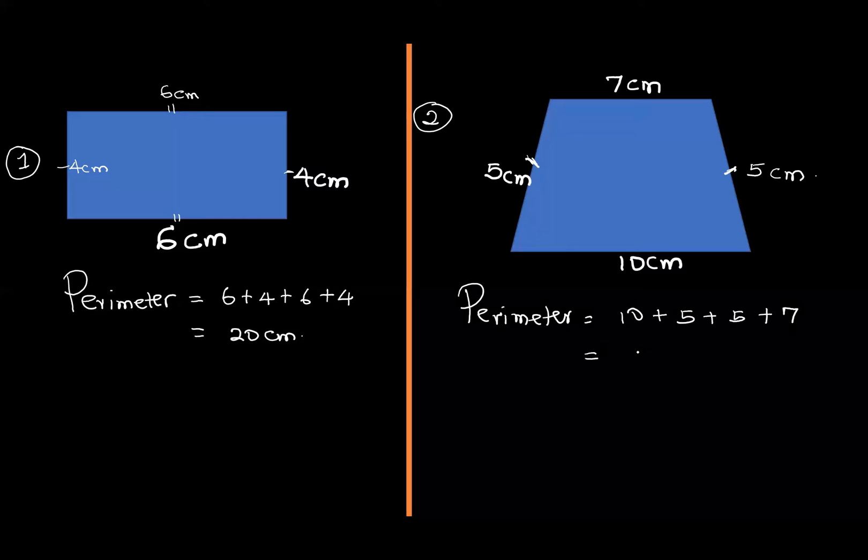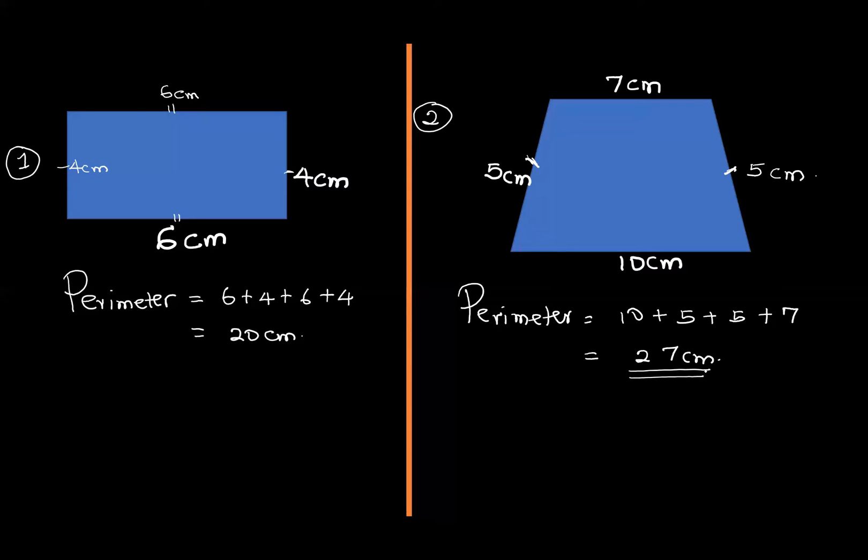This will give us 27 centimeters. Sometimes you may encounter a problem where you need to find the perimeter of a figure that has a part of a circle, like a semicircle or a quadrant. So to do that, you must first know what we call circumference.